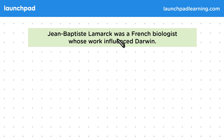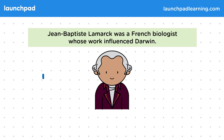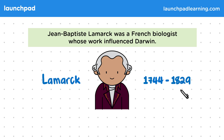Jean-Baptiste Lamarck was a French biologist whose work influenced Darwin. He lived from 1744 to 1829. You don't need to know the dates he was around, just what his ideas were and that they were an influence on Darwin.